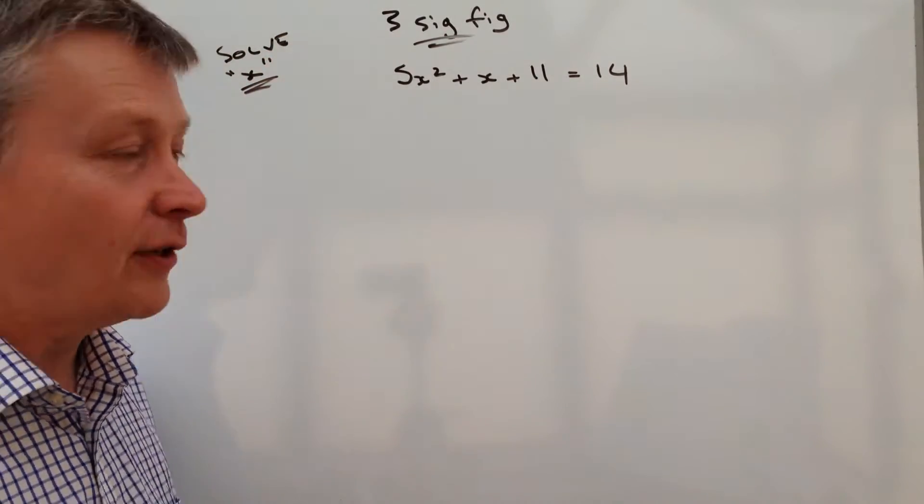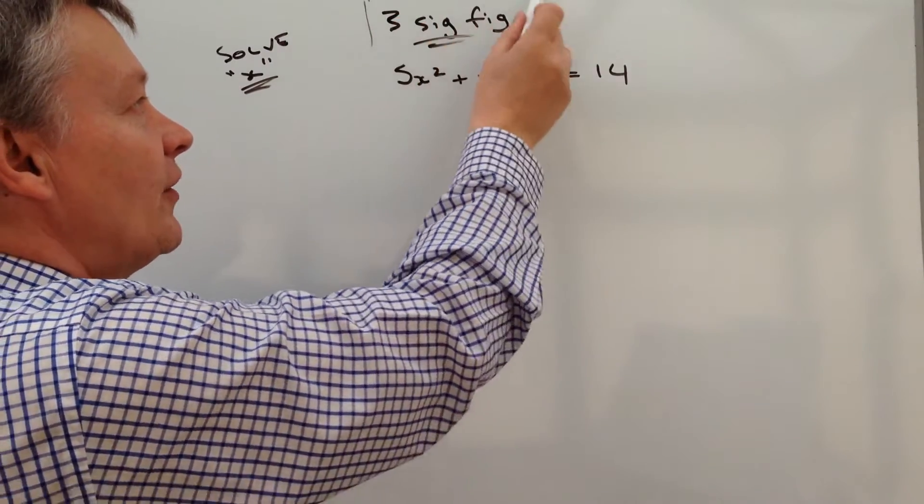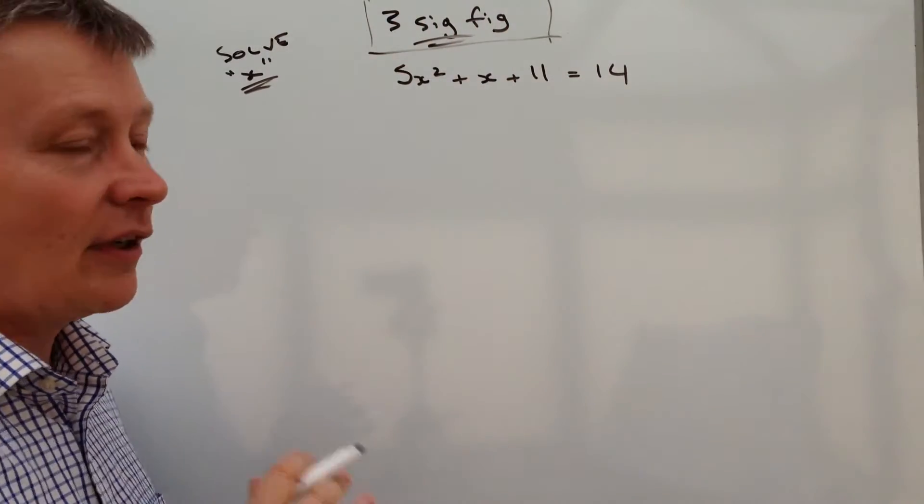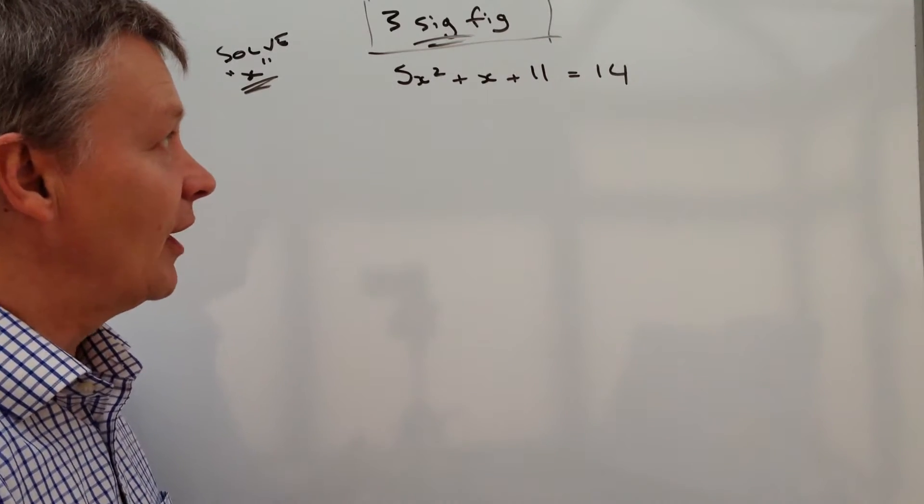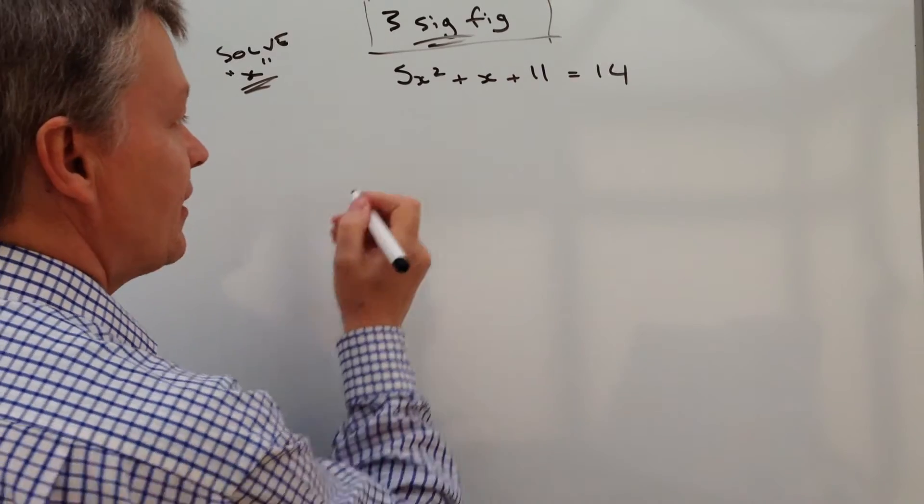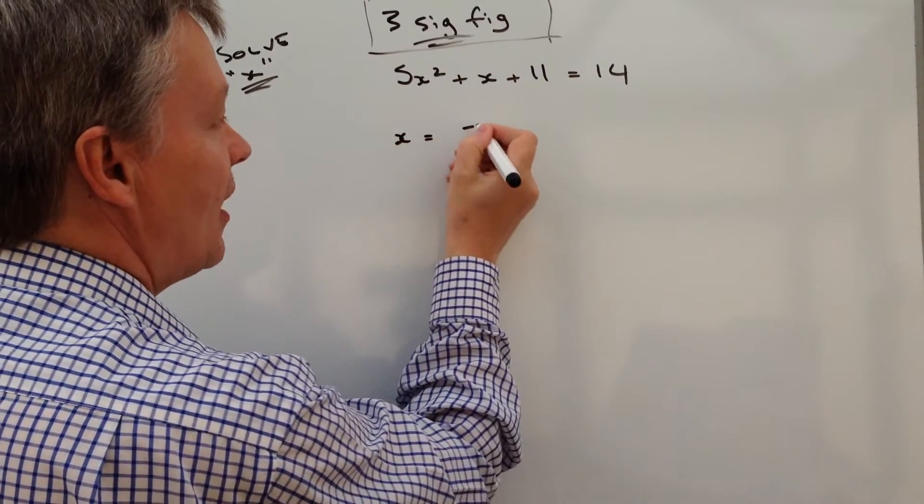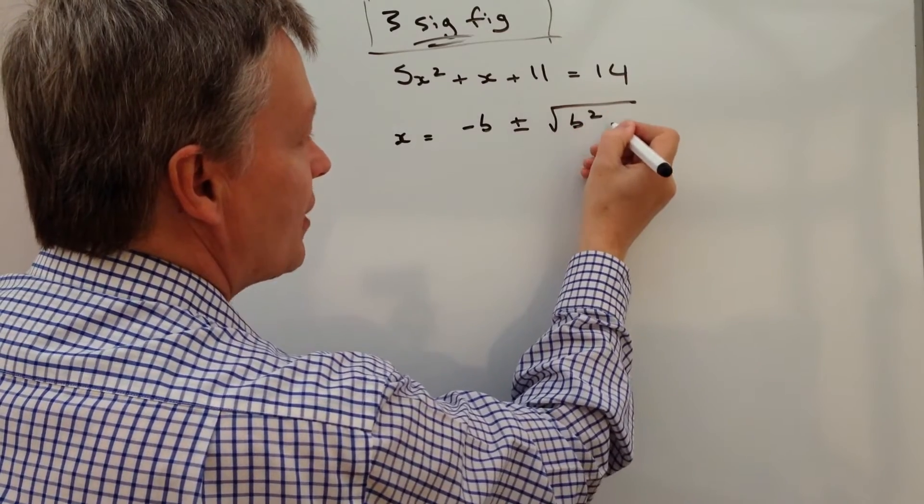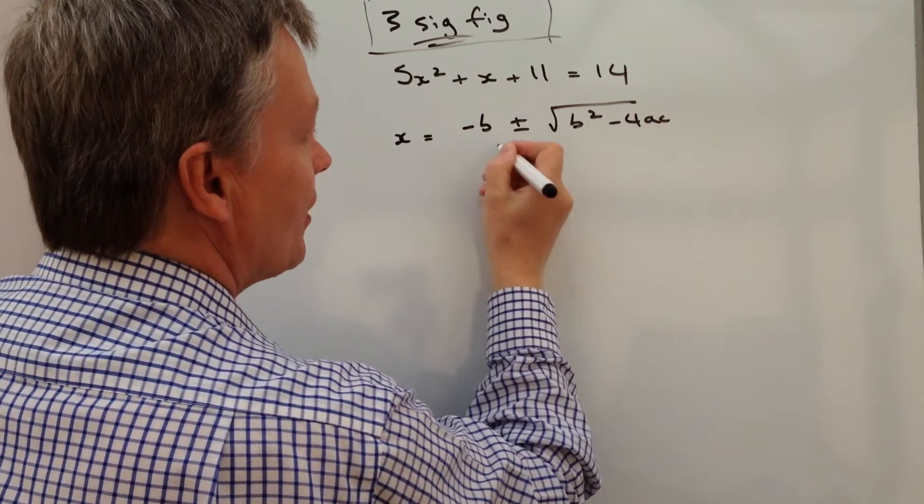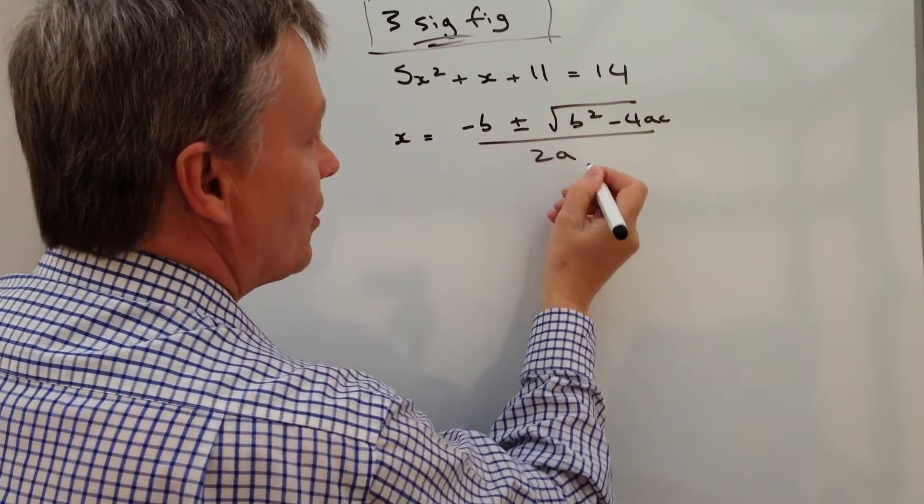When you see something like that, this is the bit that's important because it tells you that you need to use the quadratic formula. The quadratic formula is x equals minus b plus or minus the root of b² minus 4ac all over 2a.